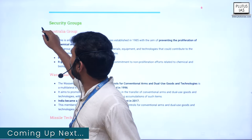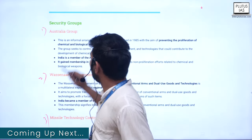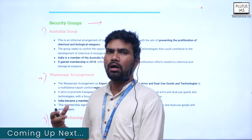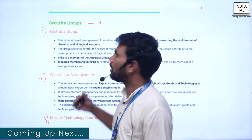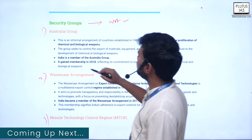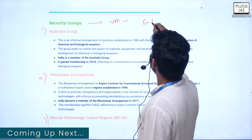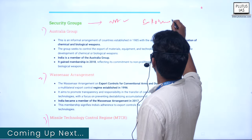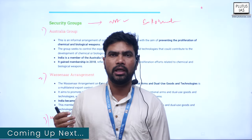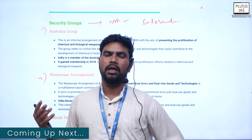There are basically four security groupings. One thing you have to understand is these are not arrangements where all countries are involved. These are informal arrangements — they are not negotiated on a multilateral body like the UNO or similar organizations.